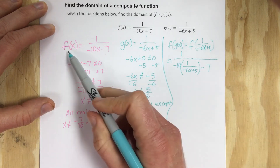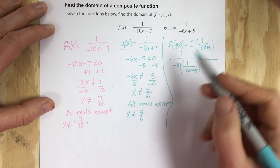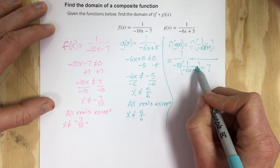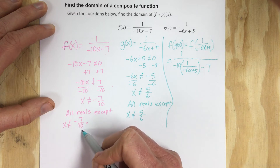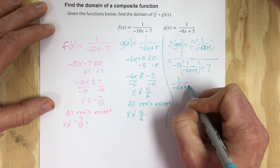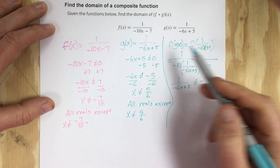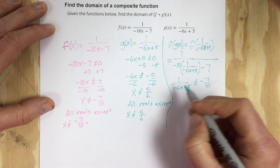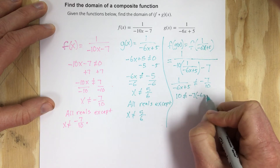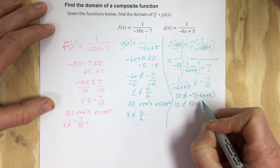Now here's what we learned about the f function: the original x cannot equal negative 7 tenths. So when I replace x with 1 over negative 6x plus 5, that piece also cannot equal negative 7 tenths. I'll set 1 over negative 6x plus 5 not equal to negative 7 tenths, and cross multiply: 10 cannot equal negative 7 times negative 6x plus 5, which gives us 10 cannot equal 42x minus 35.